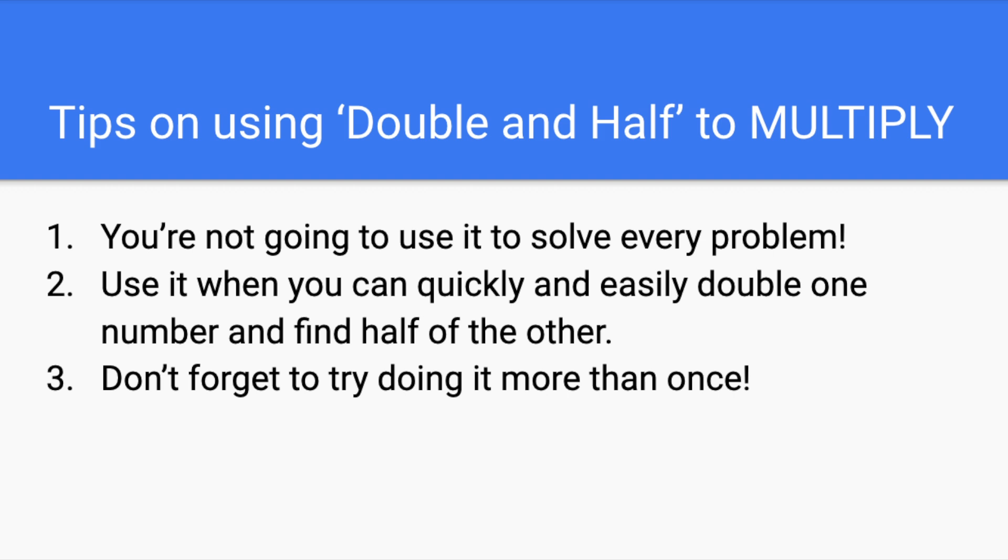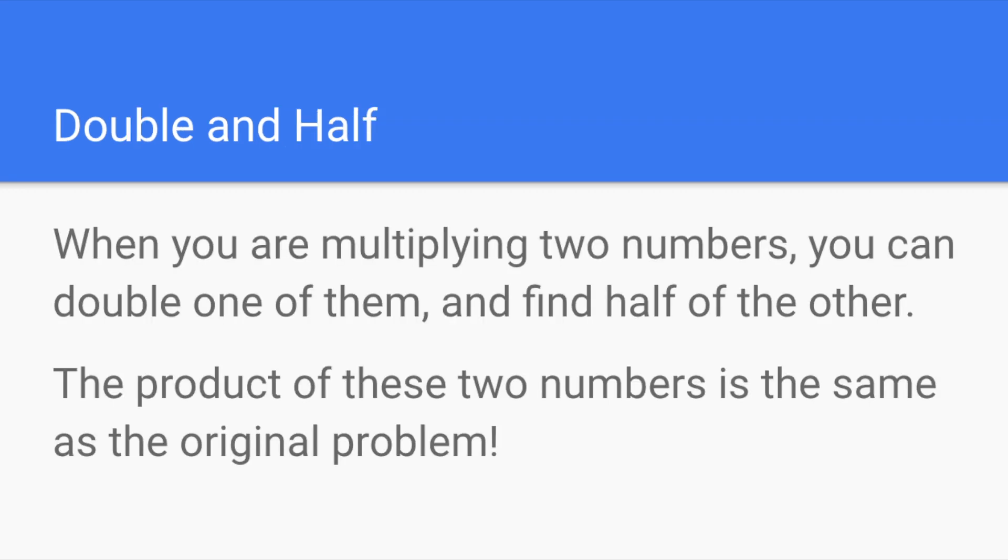And finally, number three, don't forget, try doing it more than once. Being able to double and half is a great way to see relationships between numbers. You could use something like the standard algorithm to solve every single multiplication problem. But a strategy like doubling and halving can sometimes be much faster, and there are even less chances of you making a mistake.